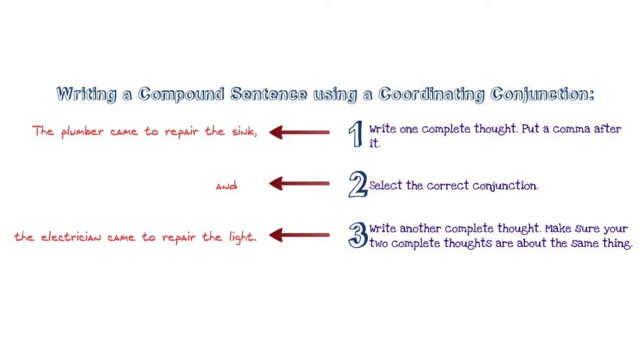Just remember to follow these steps when writing a compound sentence using a coordinating conjunction. Number one, write a complete thought and put a comma after it. Number two, select the correct conjunction for your sentence.